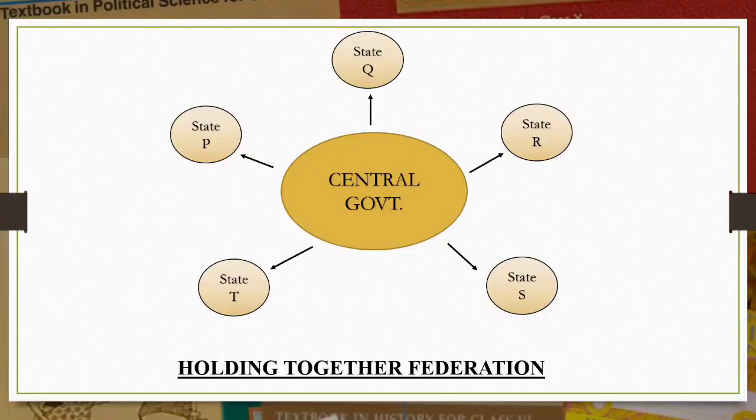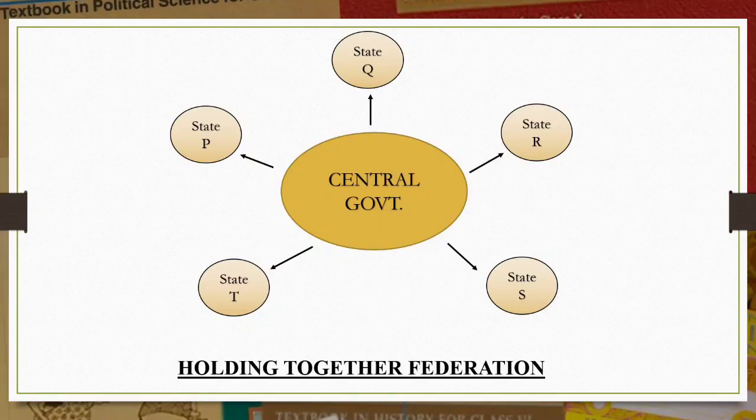The second route is where a large country, keeping in consideration its internal diversity, creates states and divides its powers between the constituent units and the national government. See the slide again — the direction of the arrow is opposite to the coming together federation. Here the central government is granting powers to the states P, Q, R, S, T, so the central government tends to be more powerful than the states.